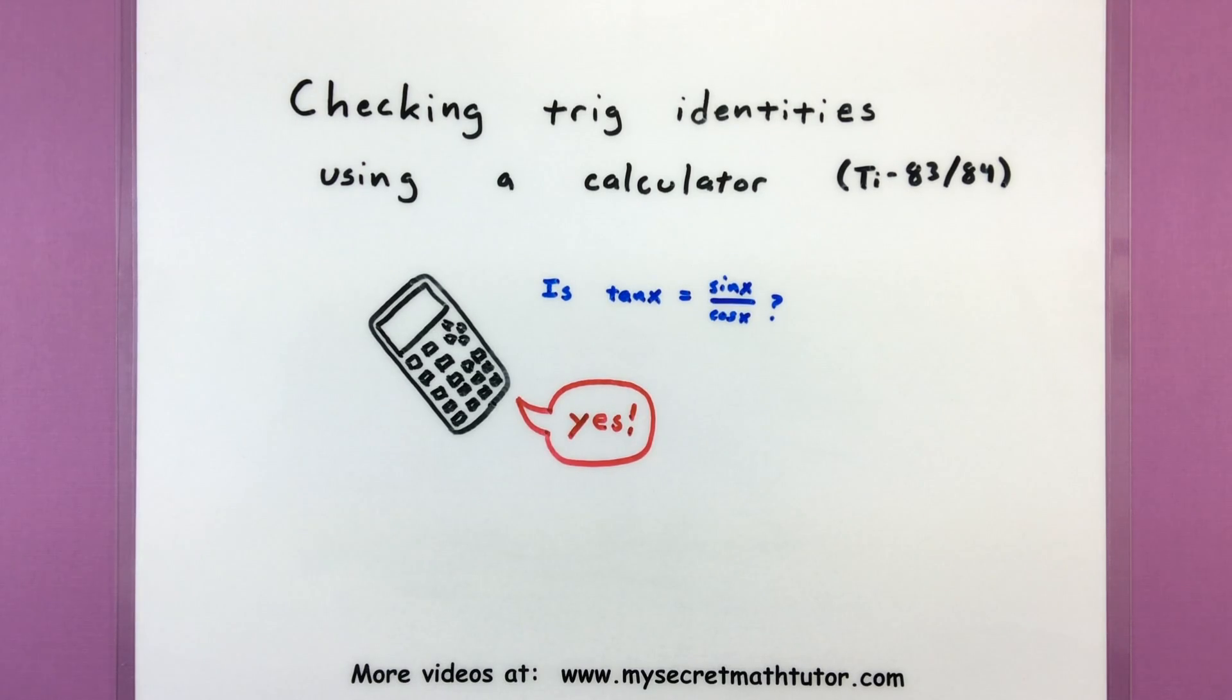Hello and welcome to My Secret Math Tutor. In this video we're going to work on checking trig identities using our calculator. This works for either a TI-83 or an 84, both of them work out great.